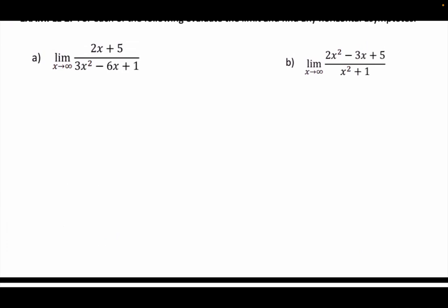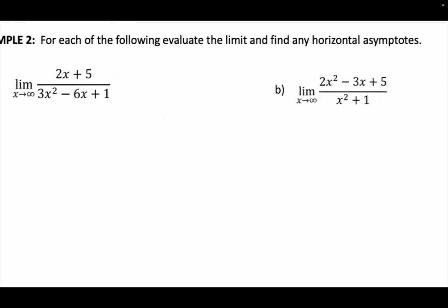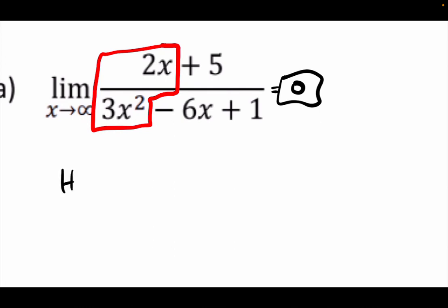Now the directions change: find the limit and any horizontal asymptote. Example a: it's bottom-heavy. The limit is zero. For the horizontal asymptote — also zero. Horizontal asymptote at y = 0.